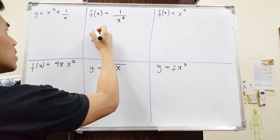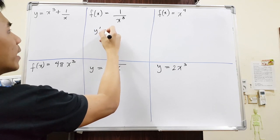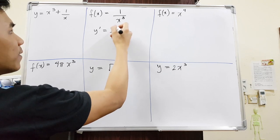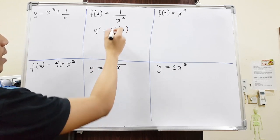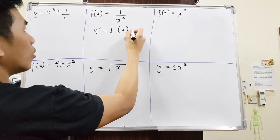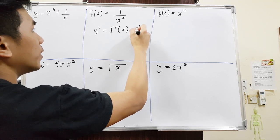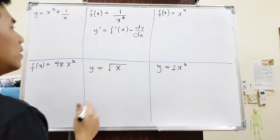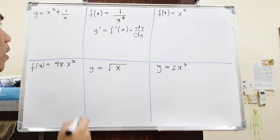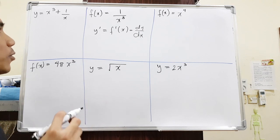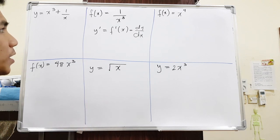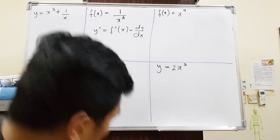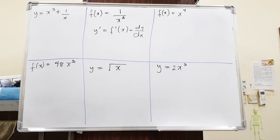So if the question is asking you to find y prime, to find f'(x), or they're asking you to find dy over dx — they all mean the same thing, which is the derivative. Or if they ask you to differentiate or derive, find the derivative, they all mean the same thing. This is the steps I'm going to teach you, but this one is only for the power rule.